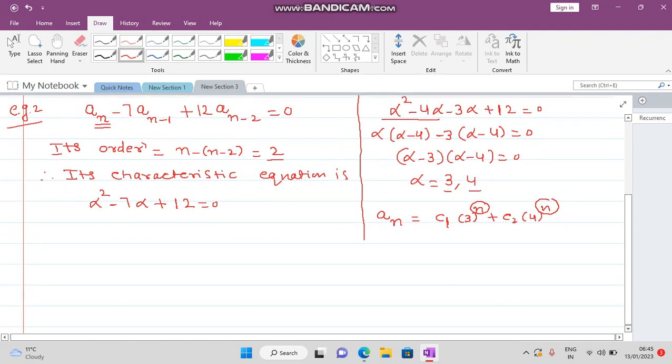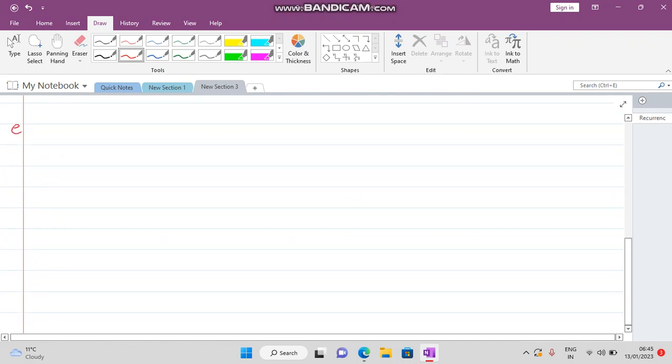I'll show you one example by taking the subscript a_k. See the next example, Example 3: a_k minus 4 times a_{k-1} plus 4 times a_{k-2}. What is its order? Its order is k minus (k-2), so it is 2. Therefore its characteristic equation is alpha squared minus 4 alpha plus 4 equals 0.